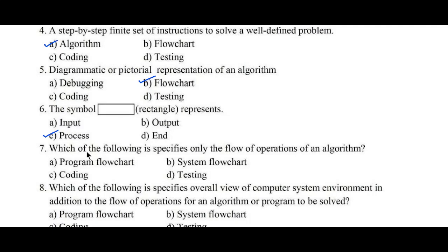Question number 7: Which of the following specifies only the flow of operation of an algorithm? Options are A. Program flowchart, B. System flowchart, C. Coding, D. Testing. So here option A, Program flowchart, is the right answer.